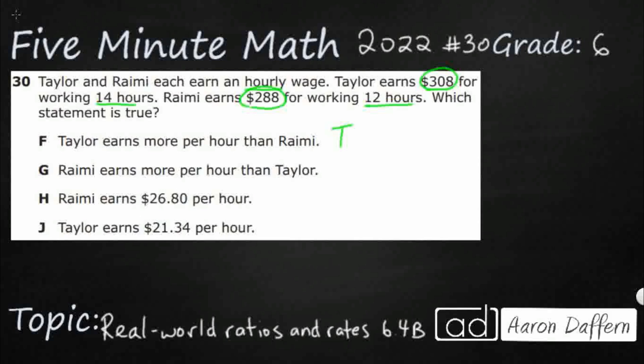Let's look at Taylor here. This is a rate. I've got $308, and we're looking at per hour. That's what we're looking for. We have 14 hours. And then for Ramey, we've got something kind of similar. We've got $288 for 12 hours.